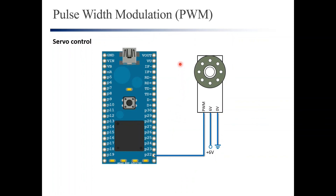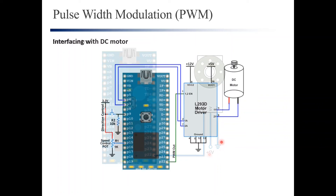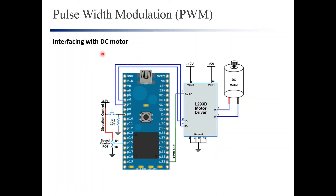The servo motor is connected to the mbed microcontroller through pin P22, with the PWM signal going to the servo's signal input. The servo also receives power from an external power source. For DC motor control, we cannot connect the motor directly to the microcontroller because the motor requires higher current than the microcontroller can supply, so we use a motor driver to provide sufficient current.